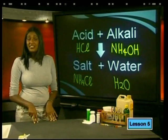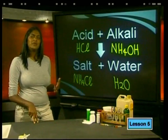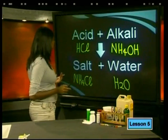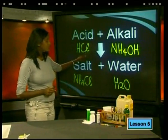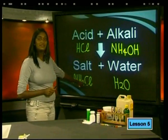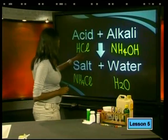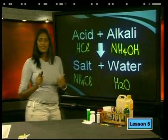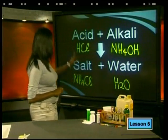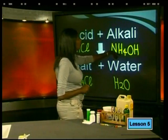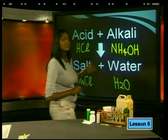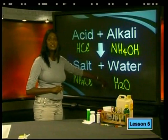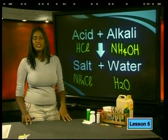Now check that the equation is balanced. Count the number of each atom present on both sides. Here I have one chlorine on each side. One oxygen on each side. For hydrogen: one plus four plus one gives us six hydrogen atoms on the left, and four plus two gives six on the right. So this equation is balanced.